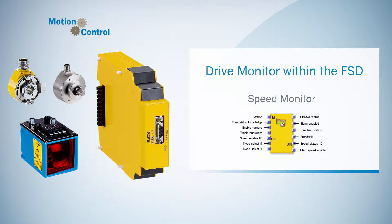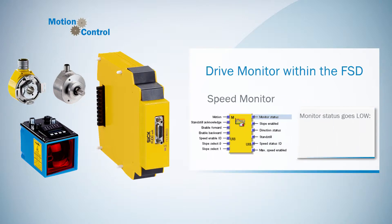Now the outputs. The output MonitorStatus is normally high. It goes low if one of the following monitoring functions has the result zero: monitoring of the reduced speed selected via the input SpeedEnable ID, monitoring of the maximum speed, and direction monitoring.